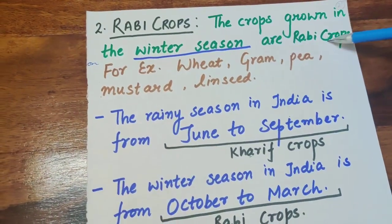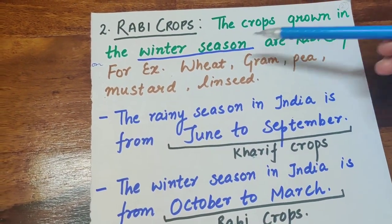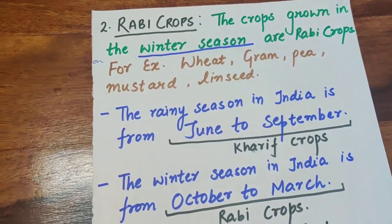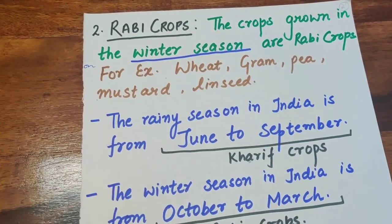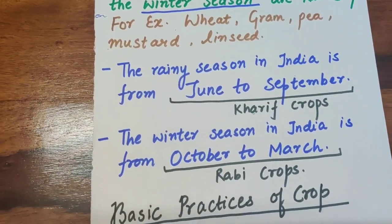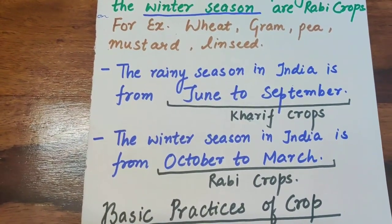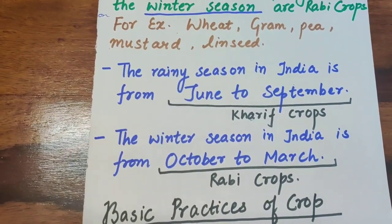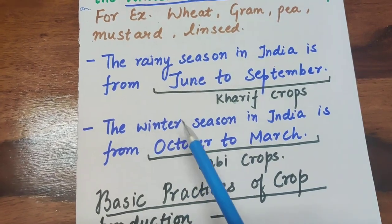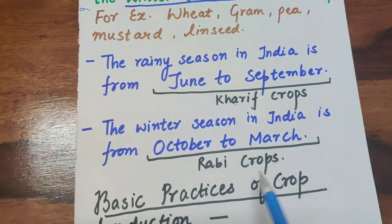The second type is Rabi crops — crops grown in the winter season. Examples are wheat, gram, pea, mustard, and linseed. The rainy season in India is from June to September — these are Kharif crops. The winter season in India is from October to March — these are Rabi crops.